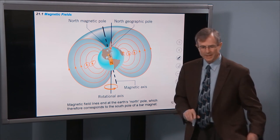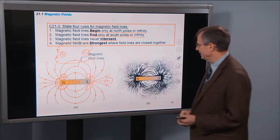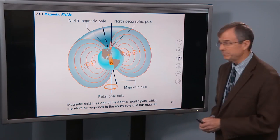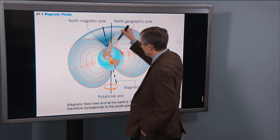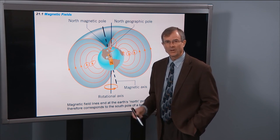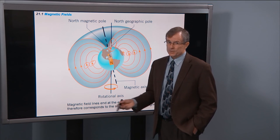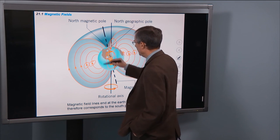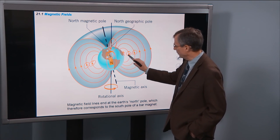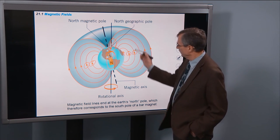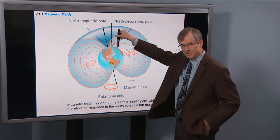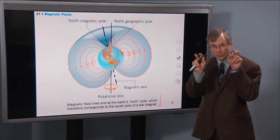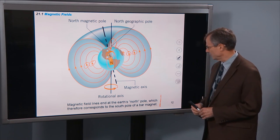We talked about how magnetic field lines begin at north poles. So we have a problem: the magnetic field lines are coming in at what we call the north pole of the Earth. The Earth's north pole is not actually a north pole — it's a south pole. It corresponds to the south pole of a bar magnet. The magnetic field lines do point north where we are, but they come up toward what we call the north pole and into the Earth there. So the Earth's north pole corresponds to the south pole of a bar magnet.